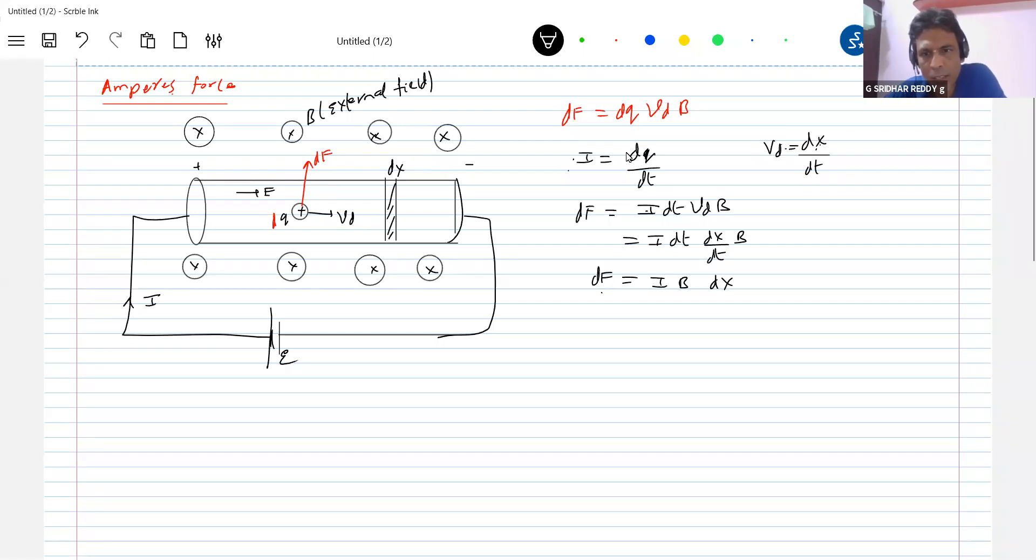So I·B·DX. This is the force acting on the small charge. So now I'll integrate it. This should be F equal to I·B. So what is the length of the conductor? Let it be L. So I'm getting I·B·L. Or in the vector form, I can write it as I into L bar cross B bar, because the direction of the drift velocity is the direction of conventional current.